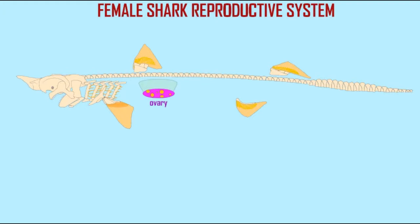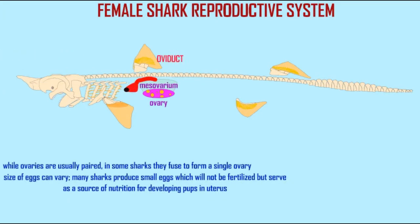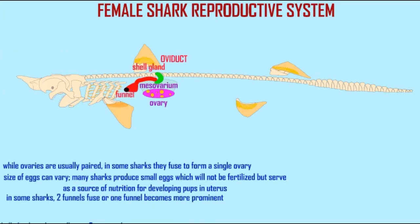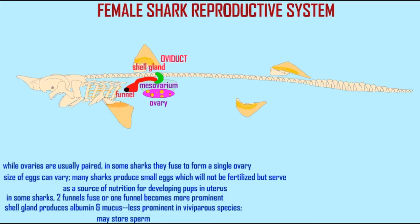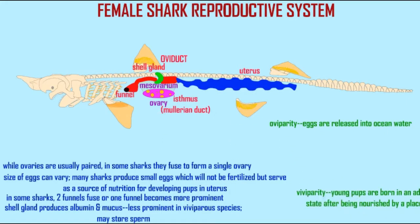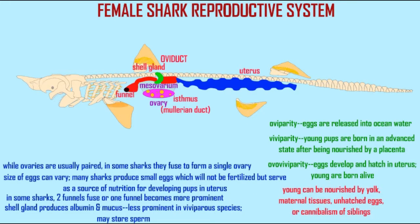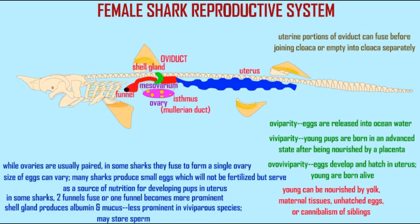The shell gland can store sperm and is not as prominent in species which undergo live birth. The uterine portions of the oviduct can fuse before joining the cloaca or empty separately.